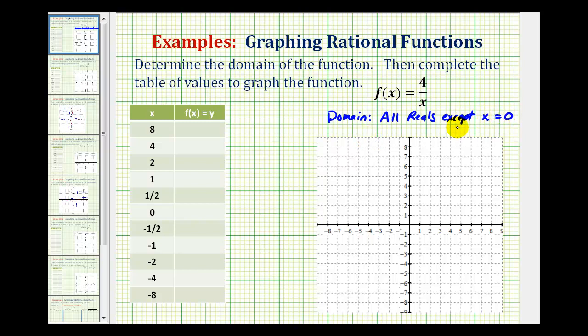This is helpful for a variety of reasons. First, this function will have a vertical asymptote at x equals 0, which should be this line here, which is also the y-axis. A vertical asymptote is a vertical line the graph approaches but does not cross.